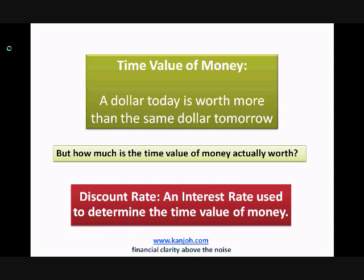You can think about it like this: it's the interest rate people have to pay you in the future in return for using your money right now, today. It's determined by a number of macroeconomic forces — I'm not going to get into it, it constantly changes — but I'll probably try to talk about it in a future video. But for now, let's focus on understanding how we can use the discount rate to determine the time value of money.